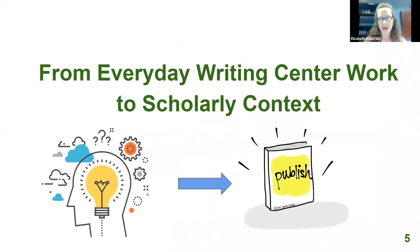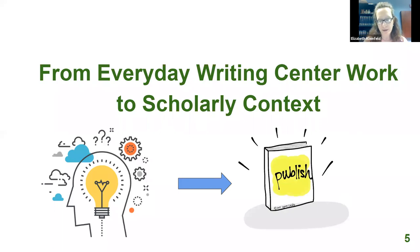Ideas for articles usually begin in everyday writing center work. We might wonder if there's a better way to do something like training tutors, or notice that methods we've used for a long time don't work as well as they have in the past. For example, in my writing center, we noticed that what we were doing with multilingual students was no longer working with the new generation of multilingual students. Or maybe we make a surprising discovery when doing routine assessment. Making the move from thinking about a topic to writing about it for an audience should involve three key moves: being relevant to readers, meeting the scope, and offering an appropriate methodology.